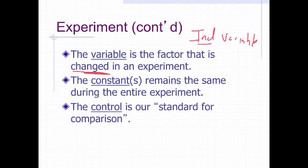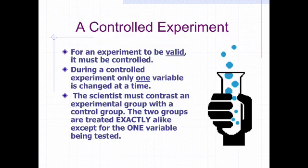The control is our standard for comparison, meaning that we are going to gauge whether or not our hypothesis has been proven or not based on how our experimental group does against this control. During a very good controlled experiment, we are only going to change one variable at a time. Because we must be able to compare and contrast this experimental group with the control. And as long as the groups are treated exactly the same, except for the one variable, we have what we call a valid, controlled experiment.